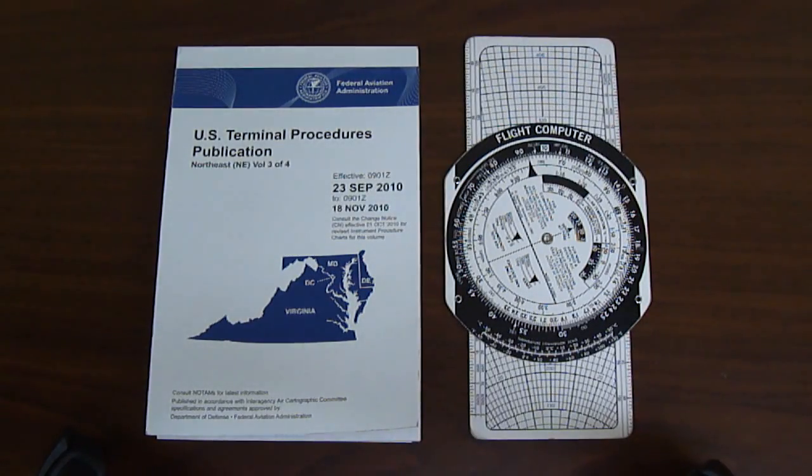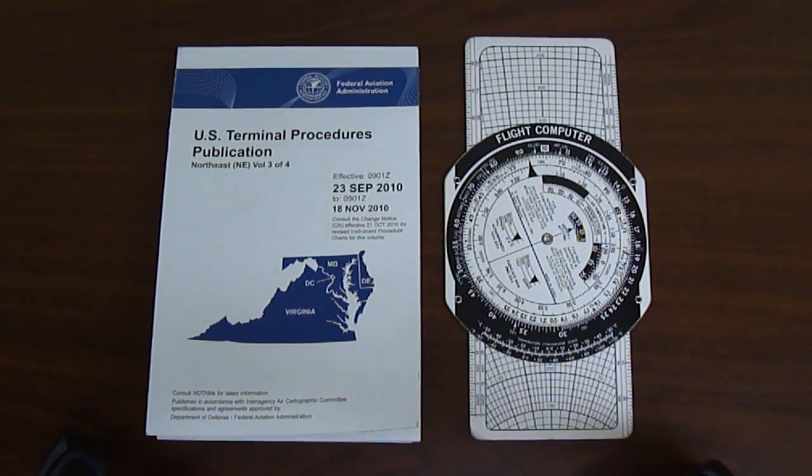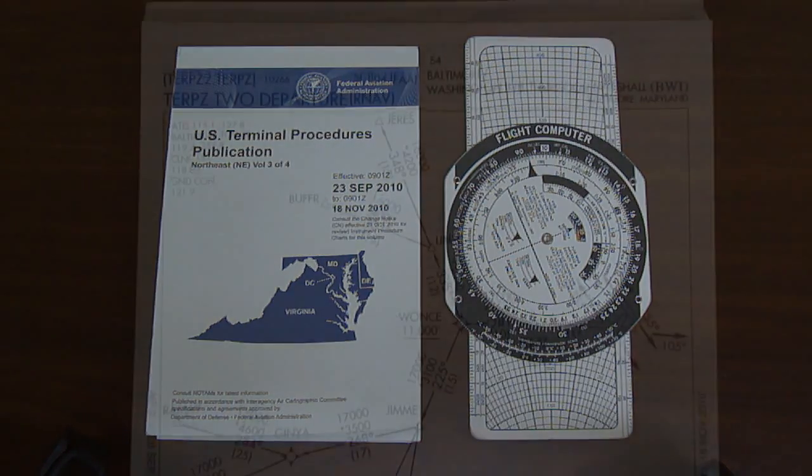In this tutorial, I'm going to show you how to convert climb rates from feet per nautical mile to feet per minute for an IFR departure approach using the E6B flight computer.